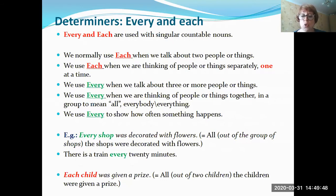For example: 'Every shop was decorated with flowers' — meaning all shops, perhaps five shops in the street, all five were decorated. Another example: 'There is a train every 20 minutes' — showing how often something happens. Then an example of 'each': 'Each child was given a prize.' Remember, 'each' refers to two people or things — so there are two children, and each one of those two children was given a prize.